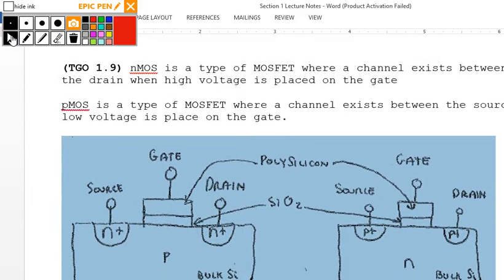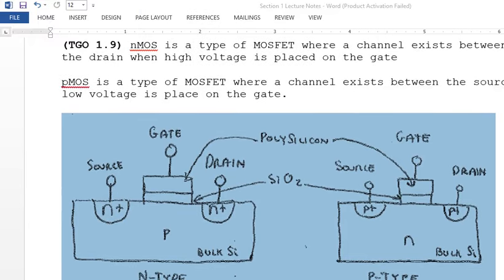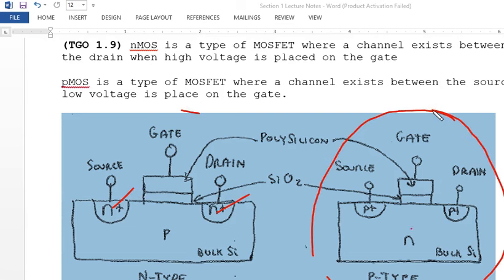NMOS is a type of MOSFET where the channel exists between source and drain when a high voltage is placed on the gate. PMOS is a type of MOSFET where the channel exists between source and drain when a low voltage is placed on the gate. The silicon dioxide film layer separates the polysilicon gate from the channel — important for preventing electron punch-through.